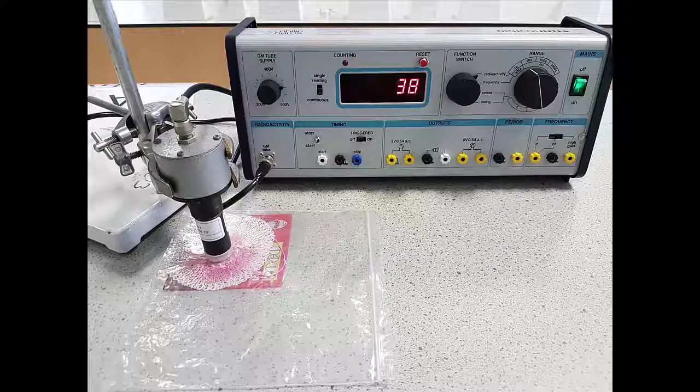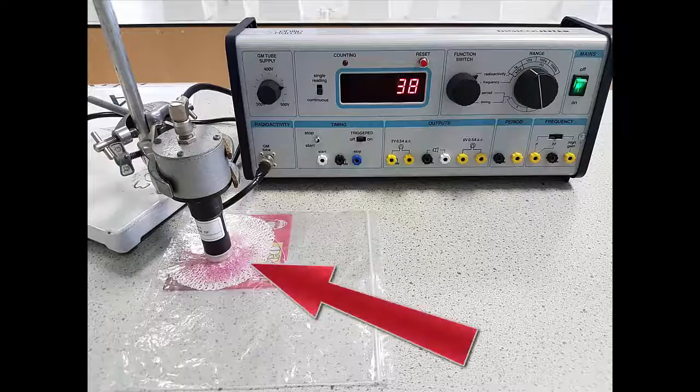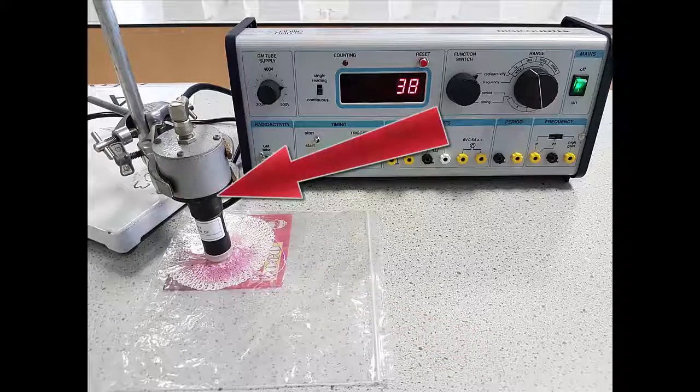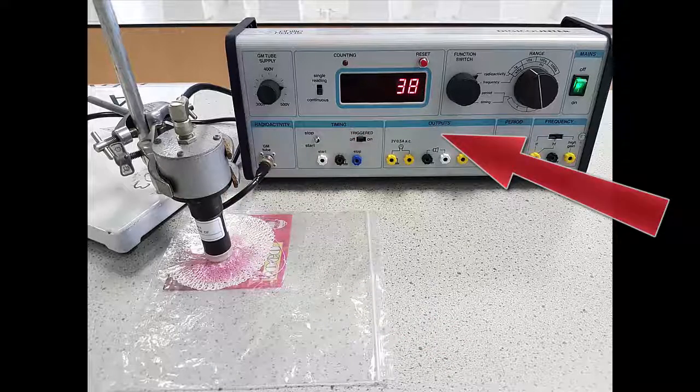In this picture, we can see the equipment set up to perform the experiment. The thoriated gas mantle is in its sealed polythene bag and above it is the Geiger-Müller tube connected to the Philip Harris digi-counter.